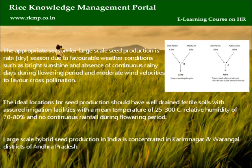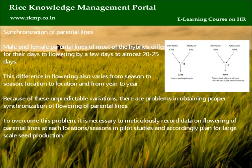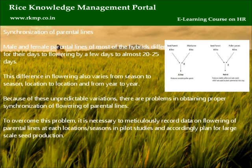Large-scale hybrid seed production in India is concentrated in Karimnagar and Warangal districts of Andhra Pradesh. Synchronization of Parental Lines: Male and female parental lines of most hybrids differ in their days to flowering by a few days to almost 20 to 25 days. This difference in flowering also varies from season to season, location to location, and year to year. To overcome this problem, it is necessary to meticulously record data on flowering of parental lines at each location or season in pilot studies, and accordingly plan for large-scale seed production.